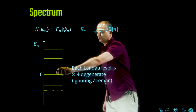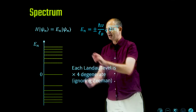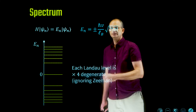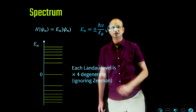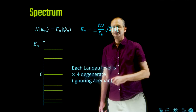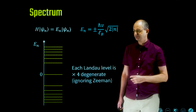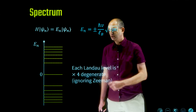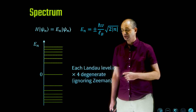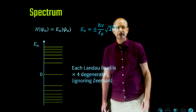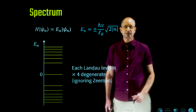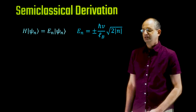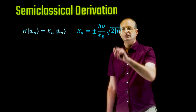The Landau level spectrum in graphene has the interesting property that energies are proportional to sqrt(n), with the overall energy scale set by ℏv/l_B — which is itself proportional to sqrt(B). Each Landau level is fourfold degenerate: the valley index can be K or K' (same energy, different wave functions), and there is also spin up or spin down.